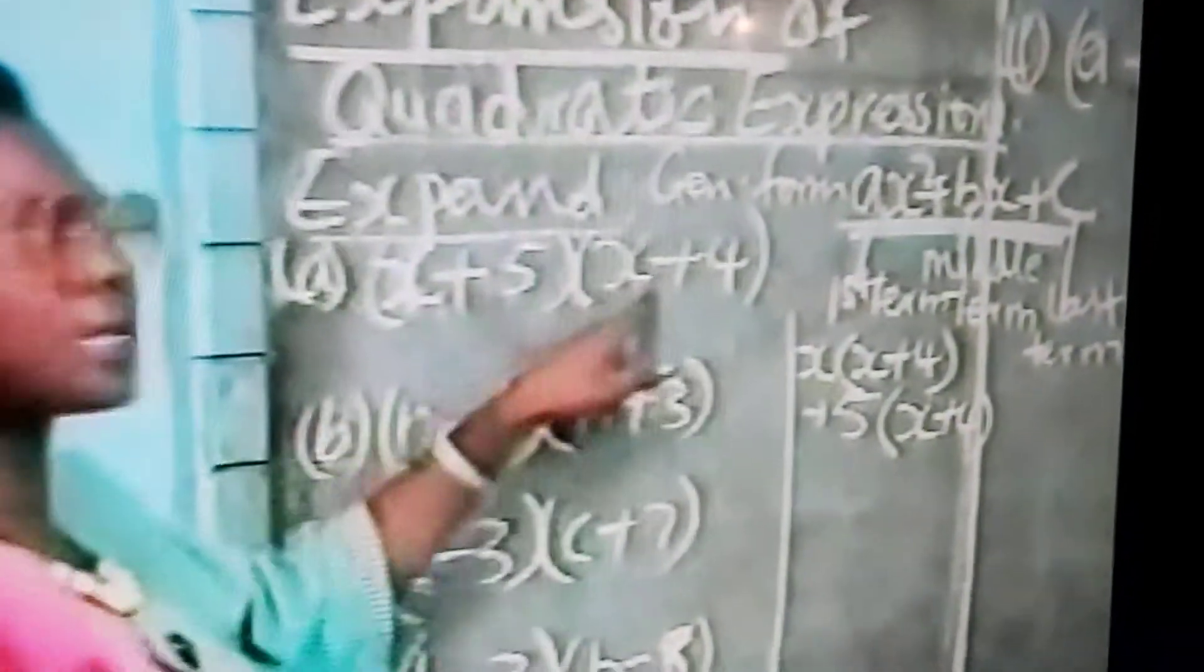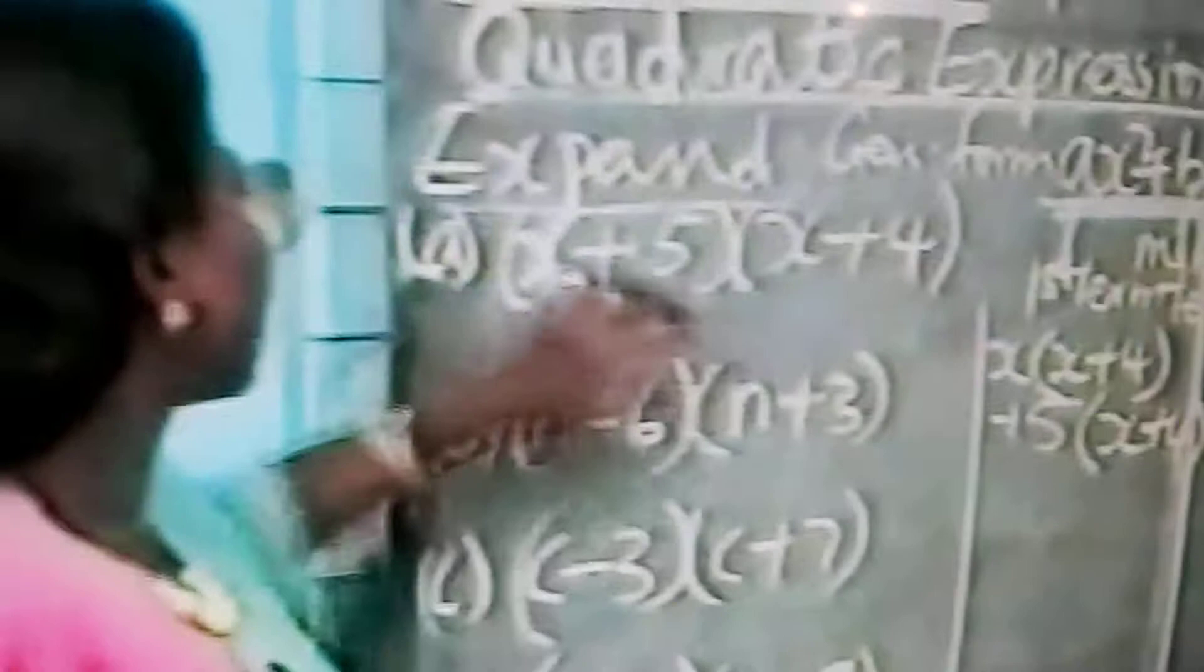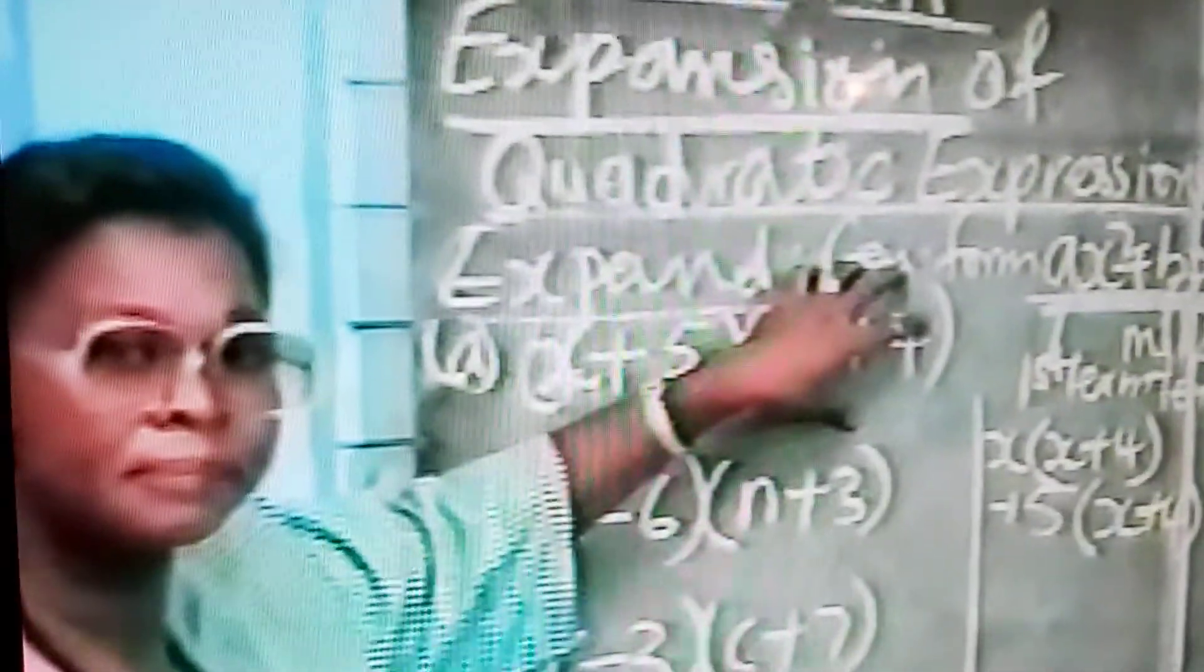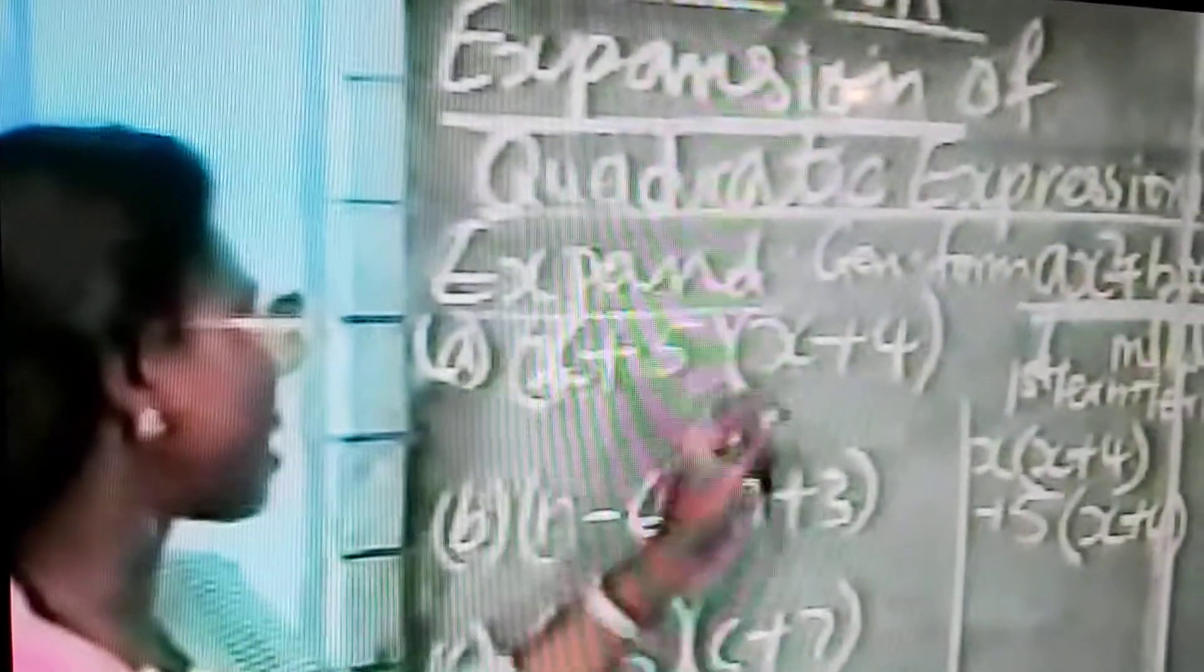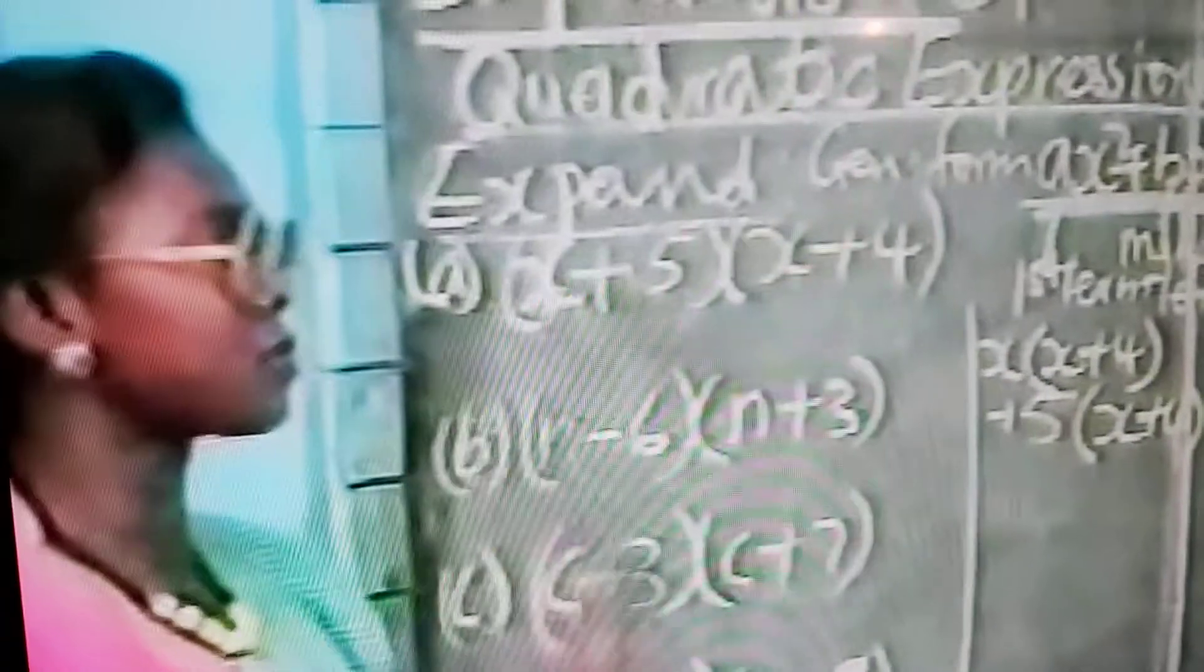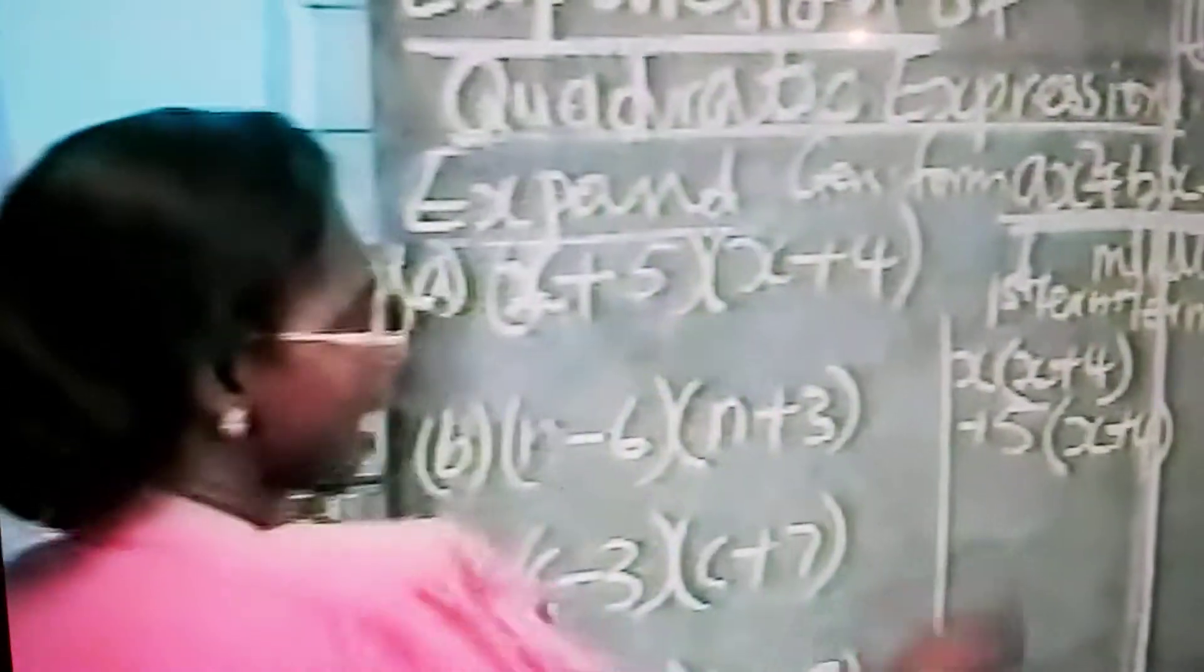That is this expression. This bracket times this bracket. So we take each term in the bracket and multiply by the bracket here. Or if it is the other way, I can say x times x plus 5 plus 4 times x plus 5.